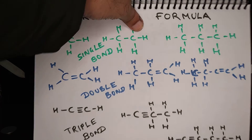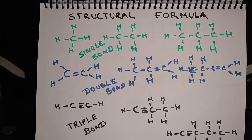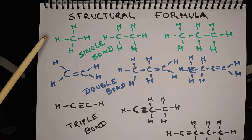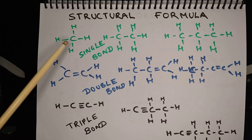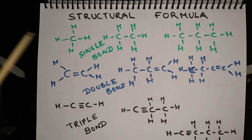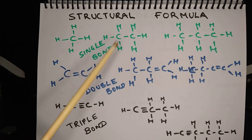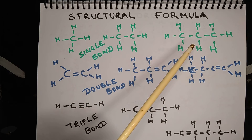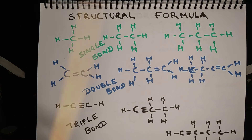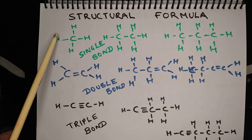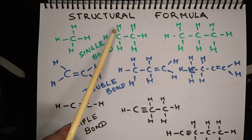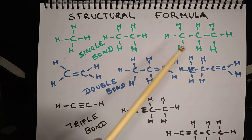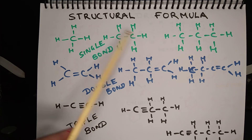Here are some structural formulae of hydrocarbons. The first row is showing alkanes: CH4 that is methane, C2H6 ethane, C3H8 that is propane. What is important to notice is that all the bonds in these compounds are single bonds, and because all are single bonds, that is why these are saturated hydrocarbons.